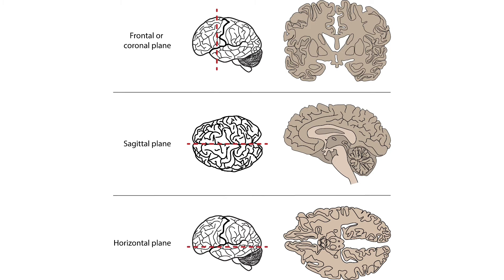The sagittal plane is also a vertical plane, but in a rostral-caudal direction. It runs perpendicular to the eyes or the ears, and divides objects into right and left regions. Finally, the horizontal plane runs parallel to the ground and will divide objects into top and bottom regions.